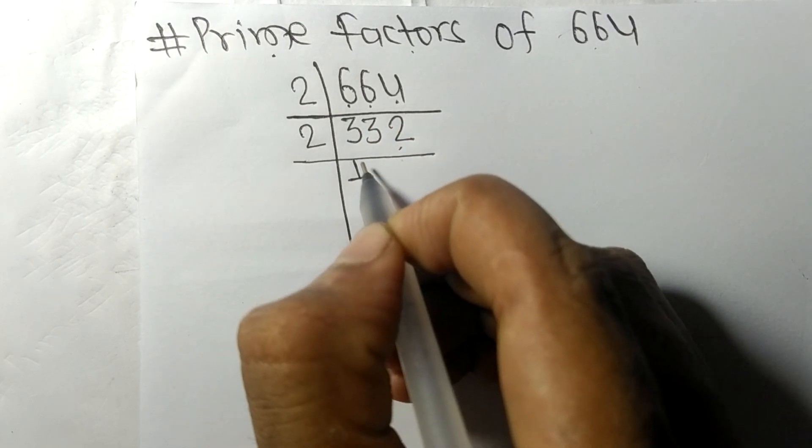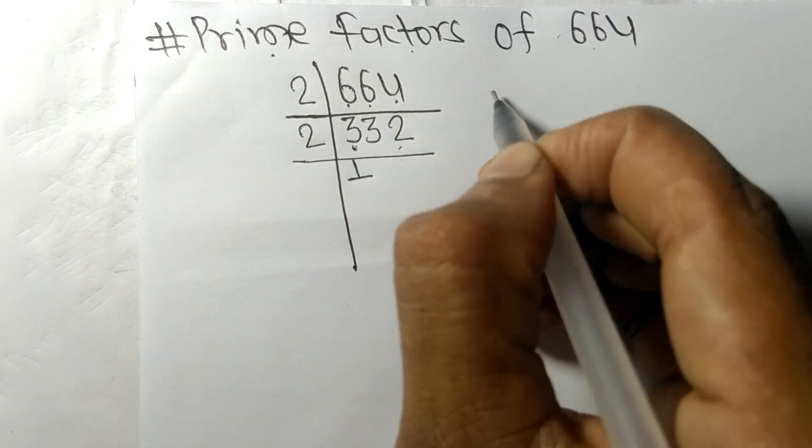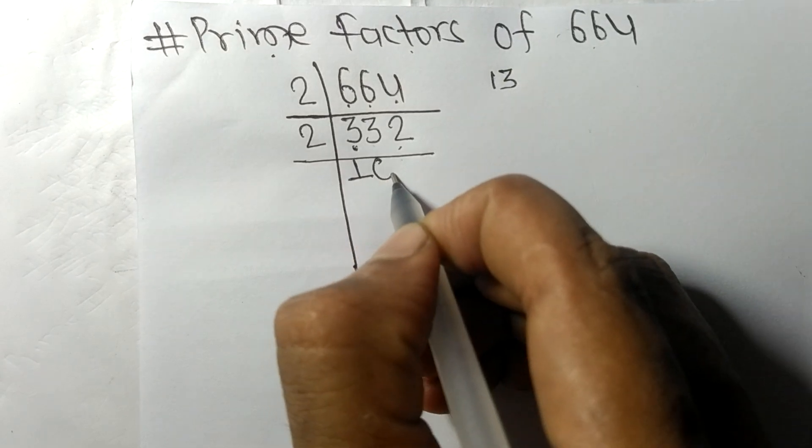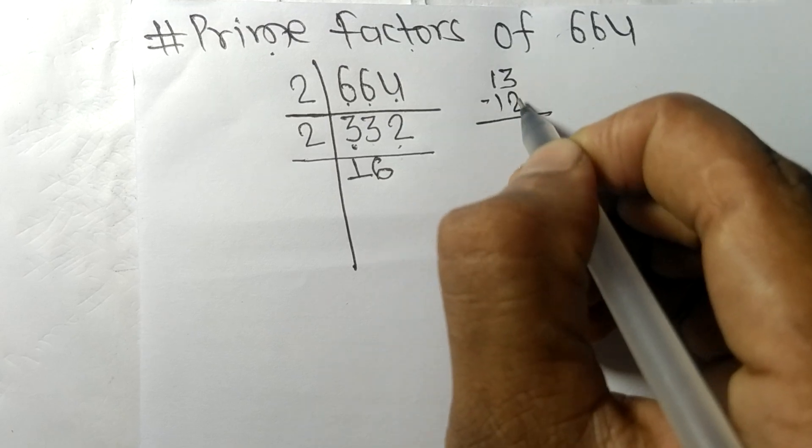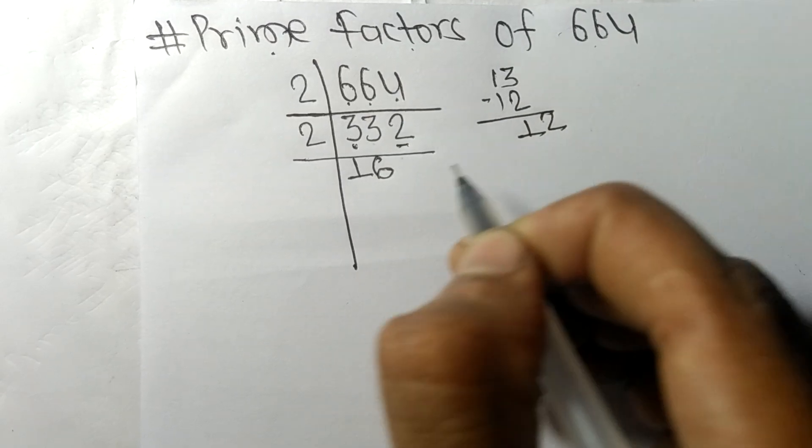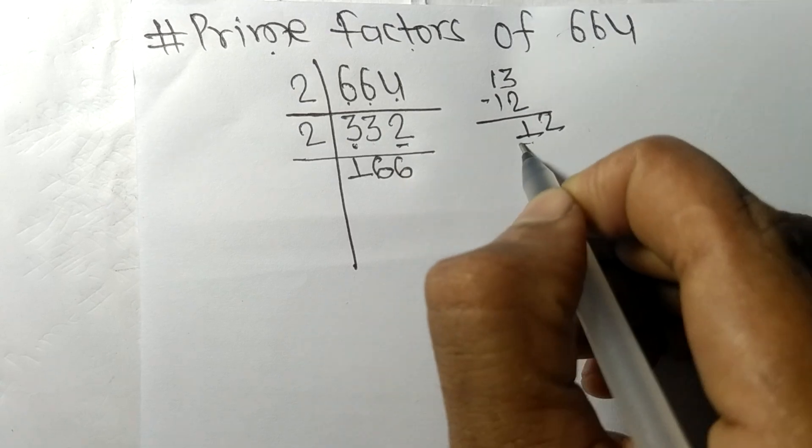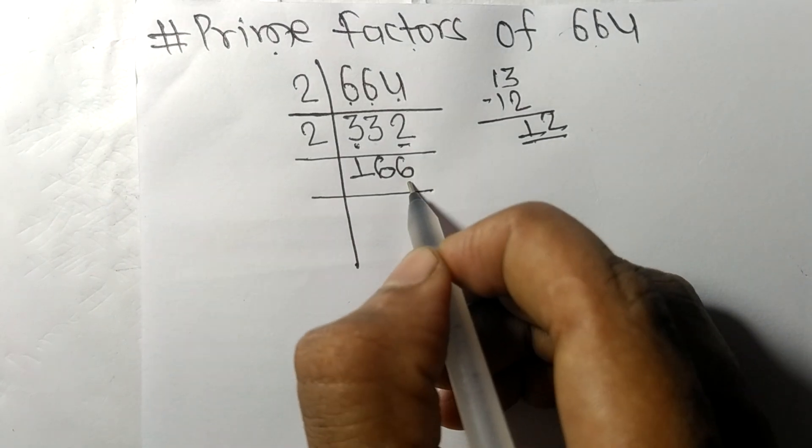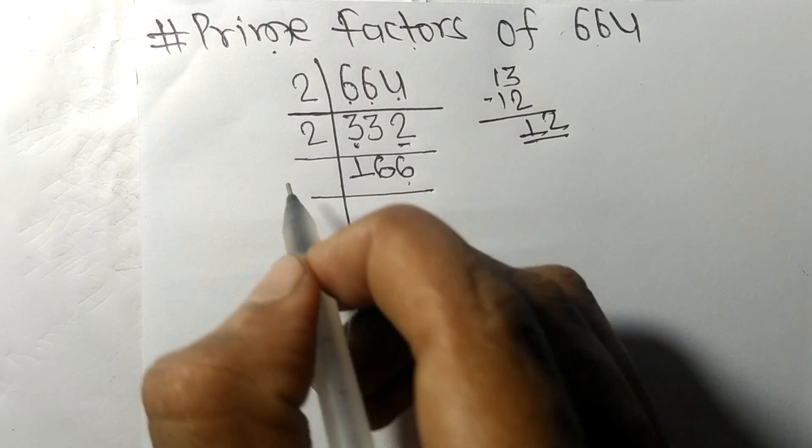2 times 1 equals 2, remainder 1. For the 3: 2 times 6 equals 12, remainder 1, giving us 166. This also ends in an even number 6, so it's divisible by 2 again.